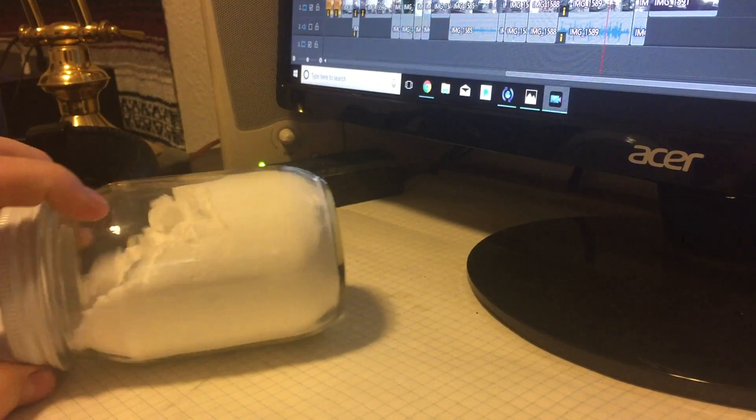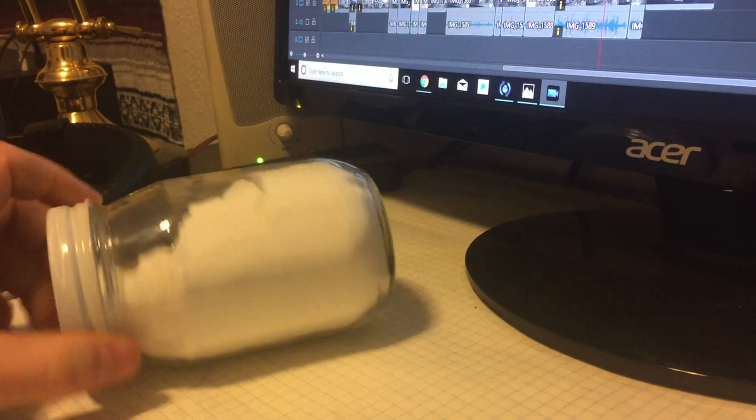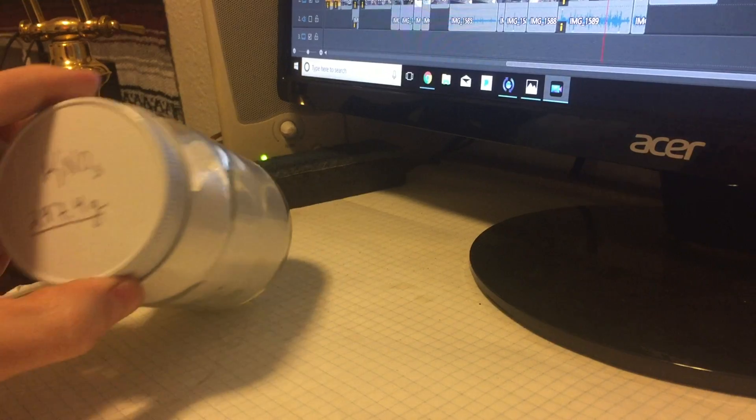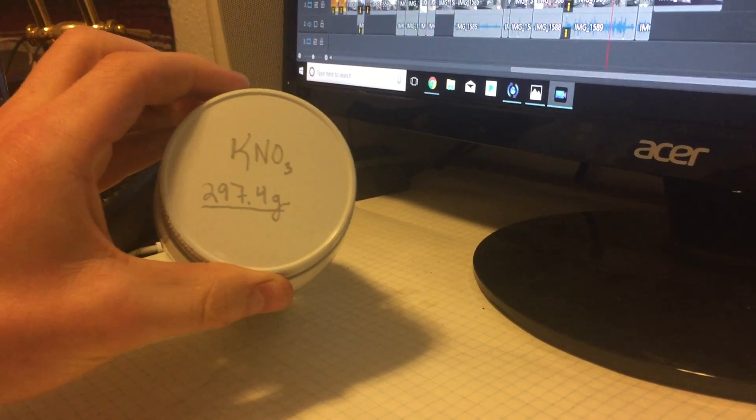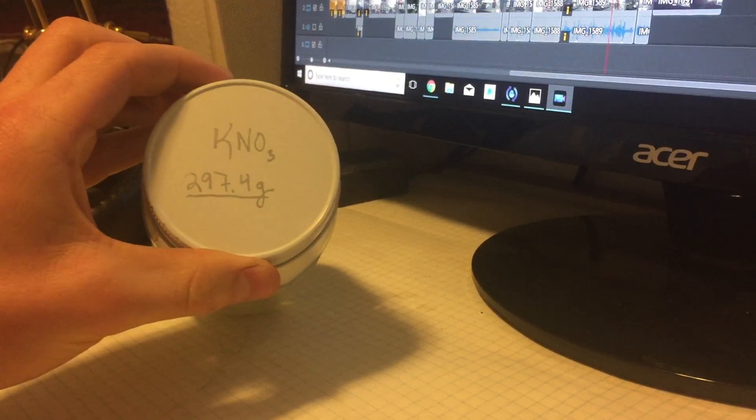When I boiled the solution down, I intended to boil it down a full liter, but I ended up only doing 500 milliliters, and this also contributed. In the end, though, we were able to produce a pretty substantial amount of potassium nitrate.